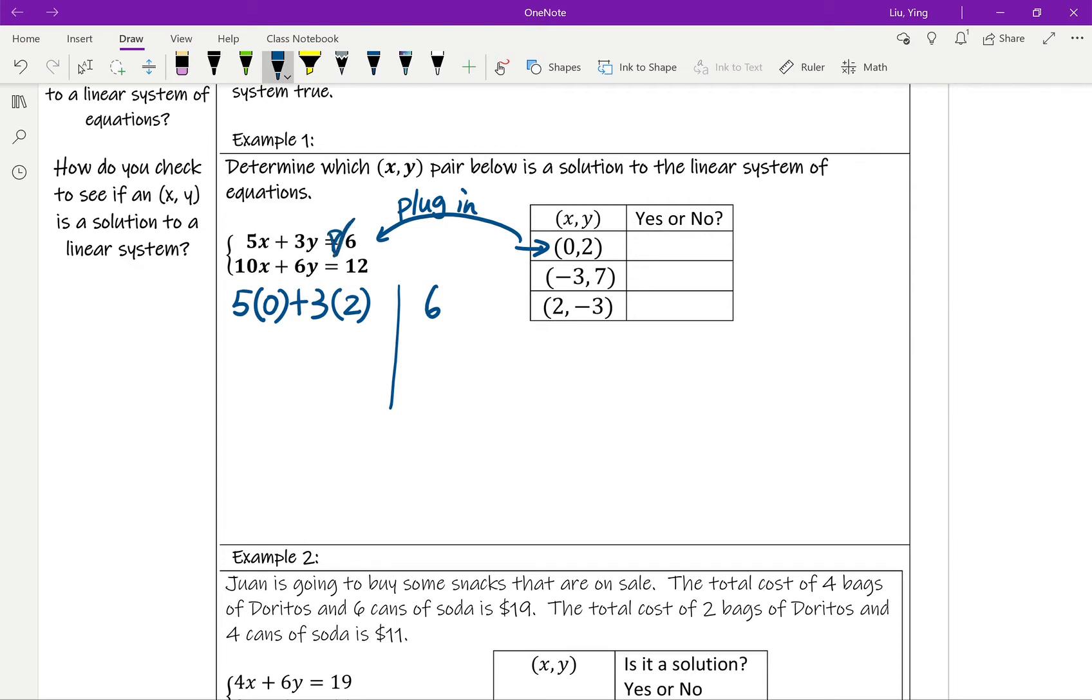We don't know yet because if it equals 6, then yes, we say that's a solution. But if it doesn't equal 6, then the left and the right hand side is not balanced. So we don't say that it's a solution.